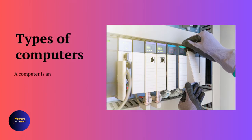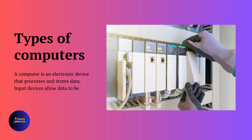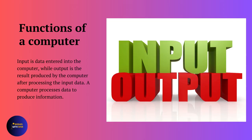Types of computers. A computer is an electronic device that processes and stores data. Input devices allow data to be entered, while output devices display or print data. Functions of a computer: input is data entered into the computer, while output is the result produced by the computer after processing the input data. A computer processes data to produce information.